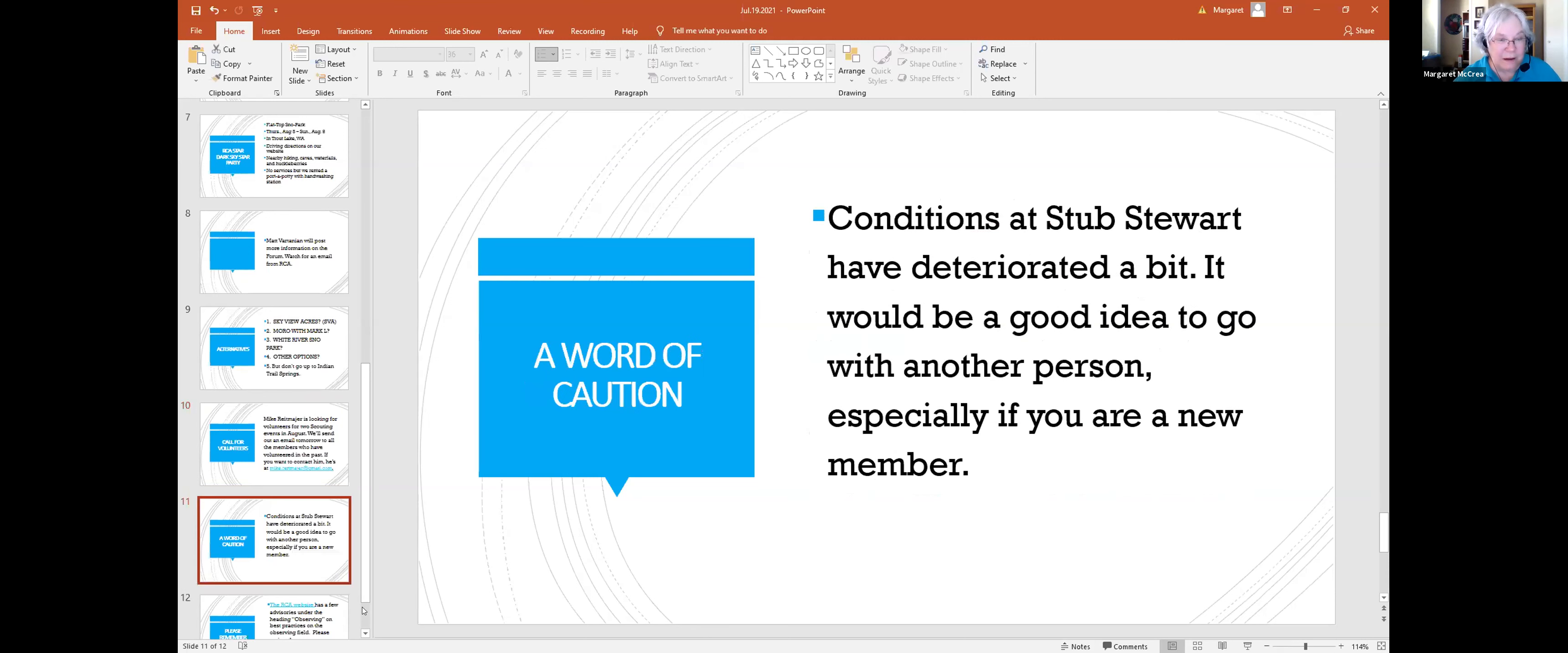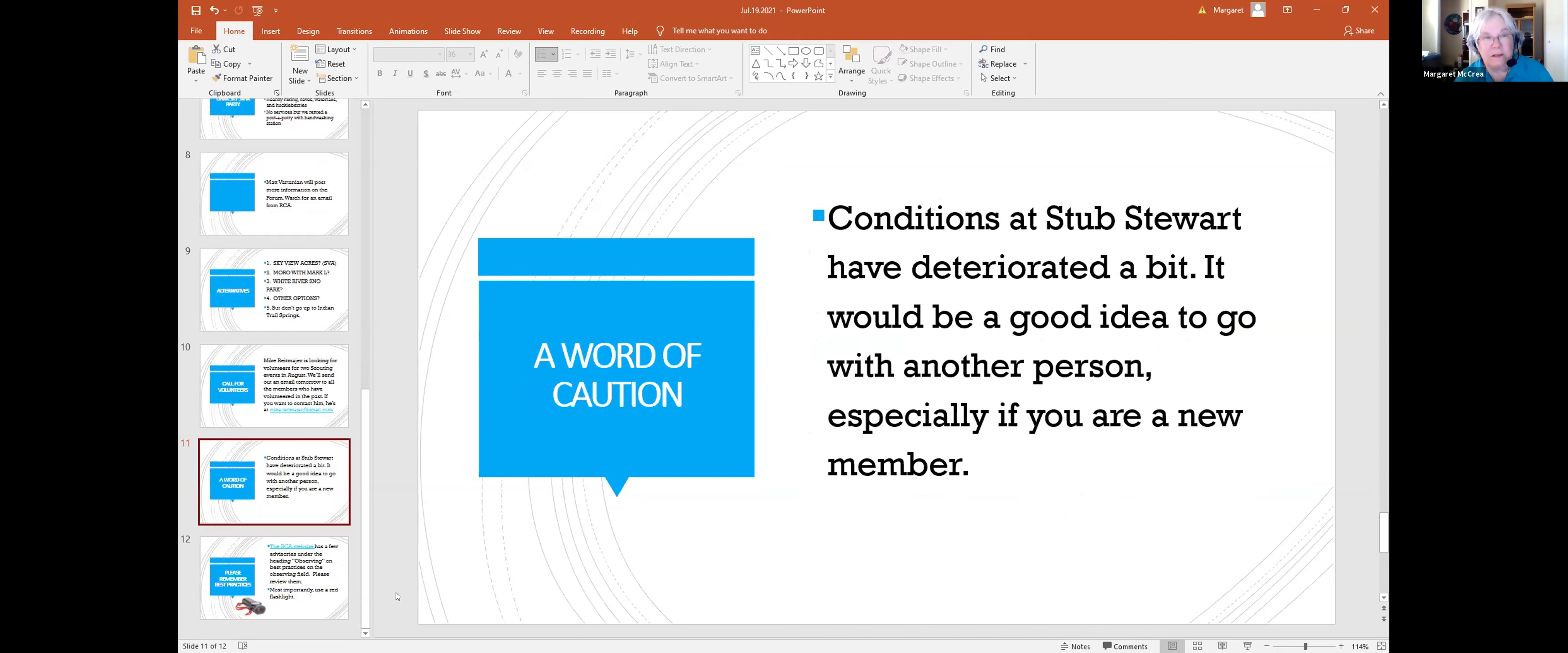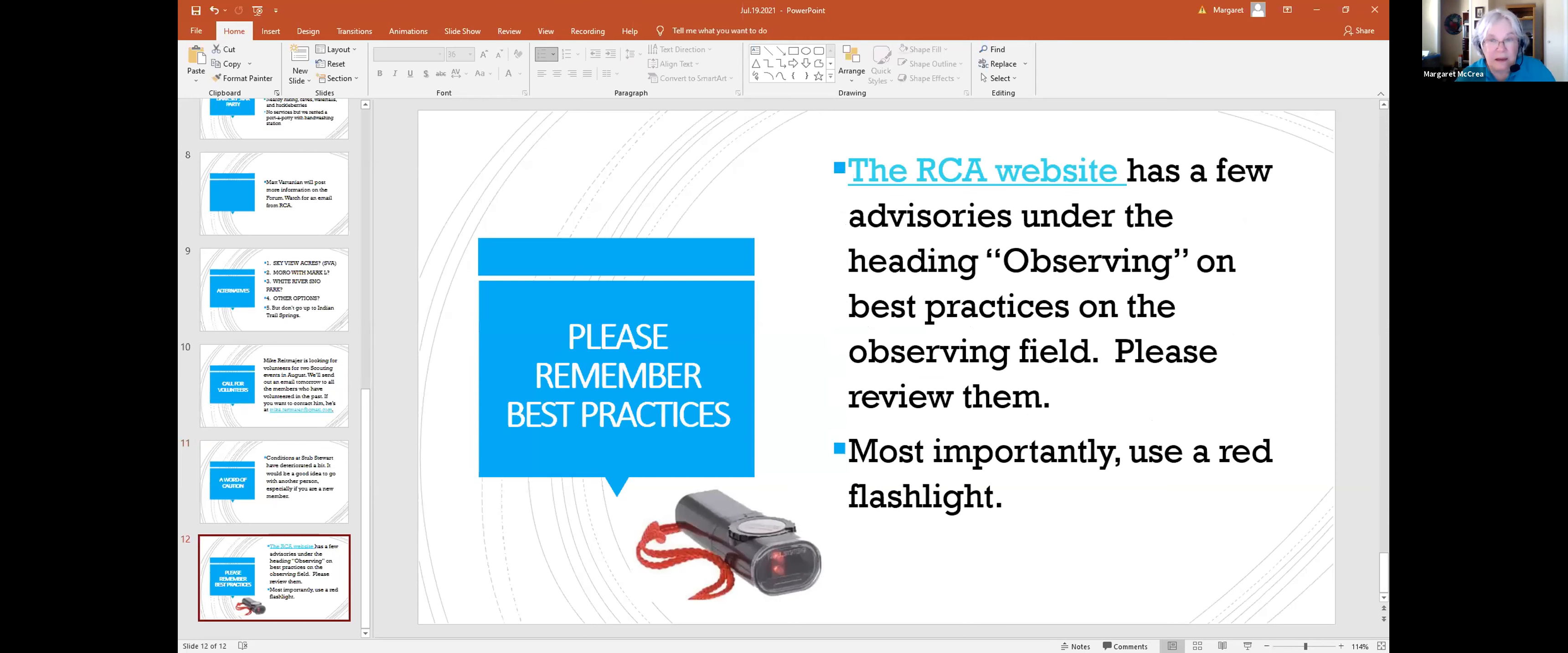We have had some feedback from Stub that things have gotten a little bit deteriorated up there. At this point I think it would be a good idea, especially if you've never been up there before, to go with another person. Even if you have been up there before, it might be a good idea to make sure you're going to meet somebody there. There've been complaints about camping people coming up and harassing the observers, a lot of problems with lights and traffic.